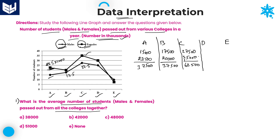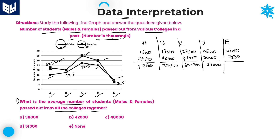For college D, males are 25,000 and females are 30,000, giving a total of 55,000. For college E, males are 10,000 and females are 7,500 (between 5 and 10), giving a total of 17,500.